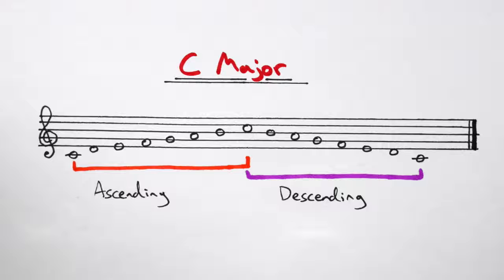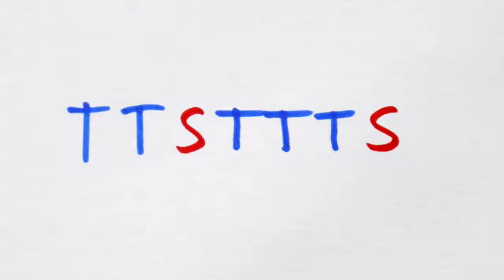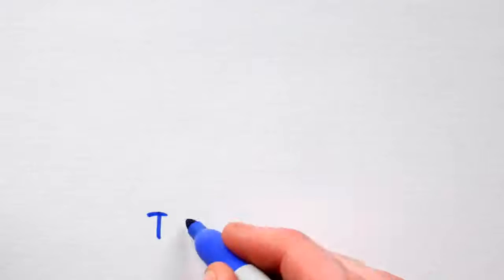Now, the seriously cool thing is that if we take our tone, tone, semitone, tone, tone, tone, semitone formula, but start it on a different note, we'll get a totally different major scale. Let's start on G.